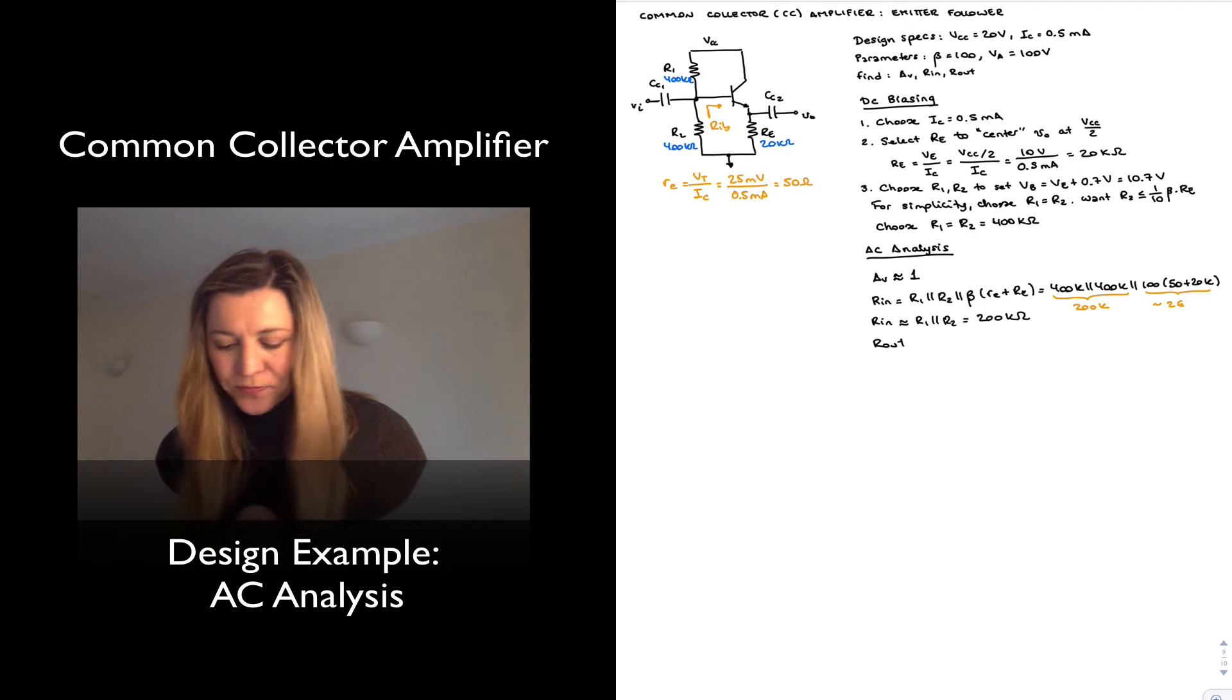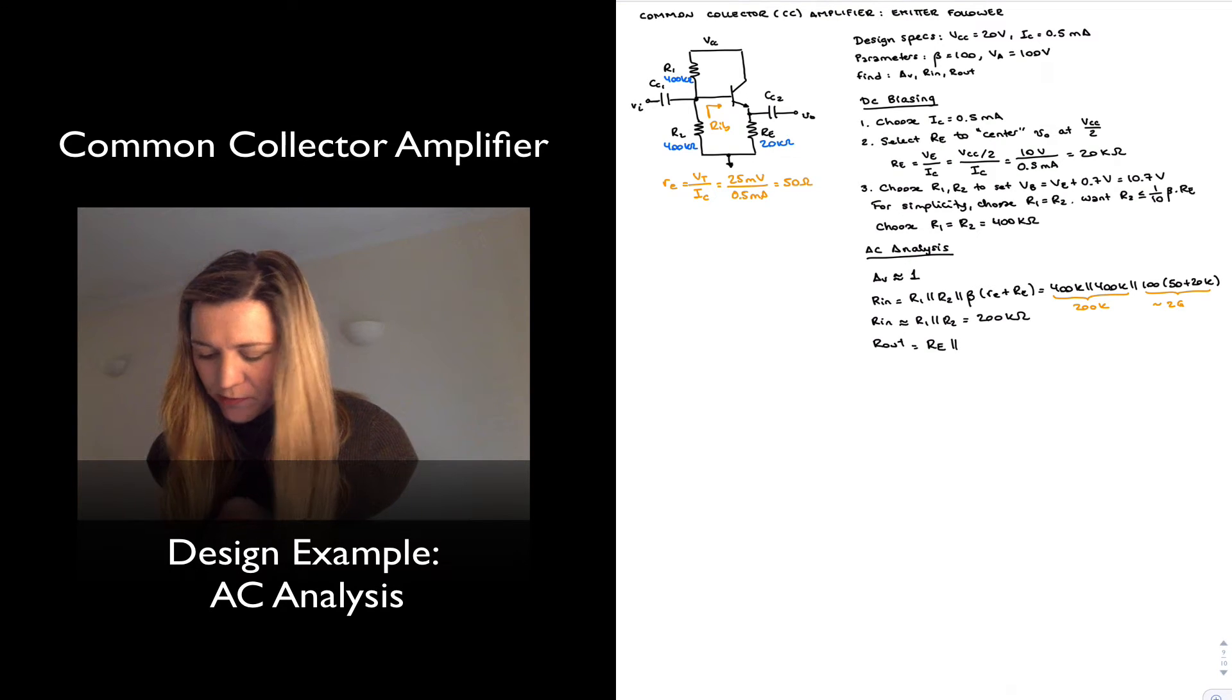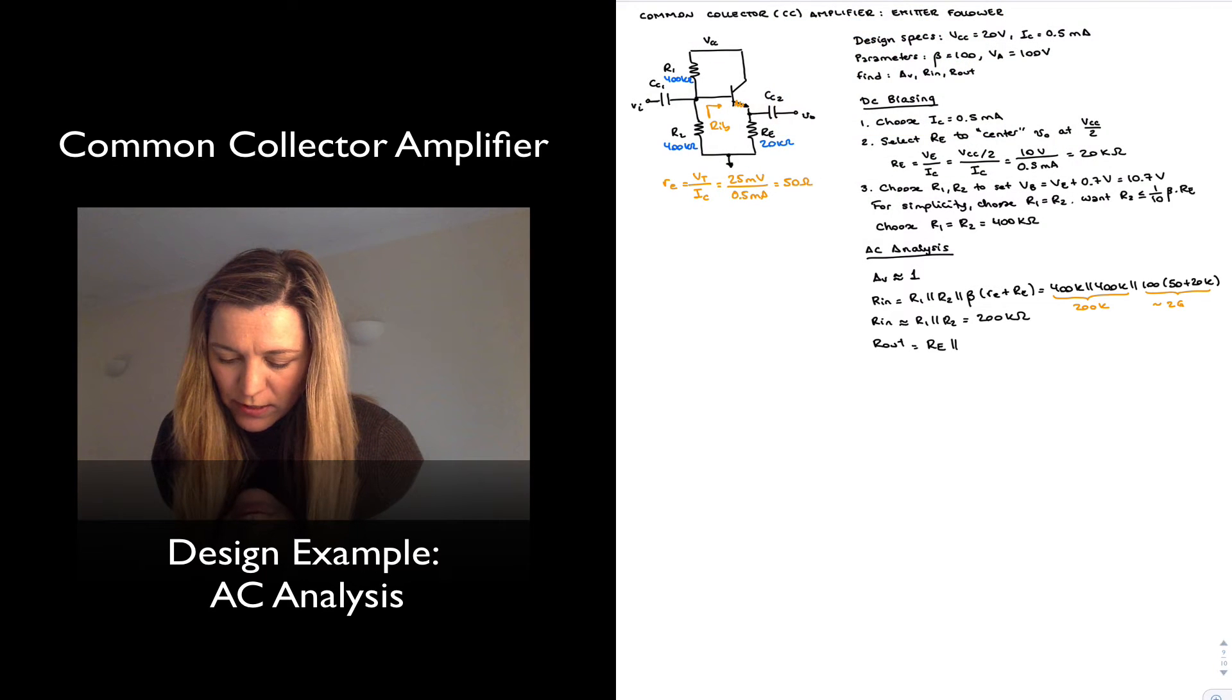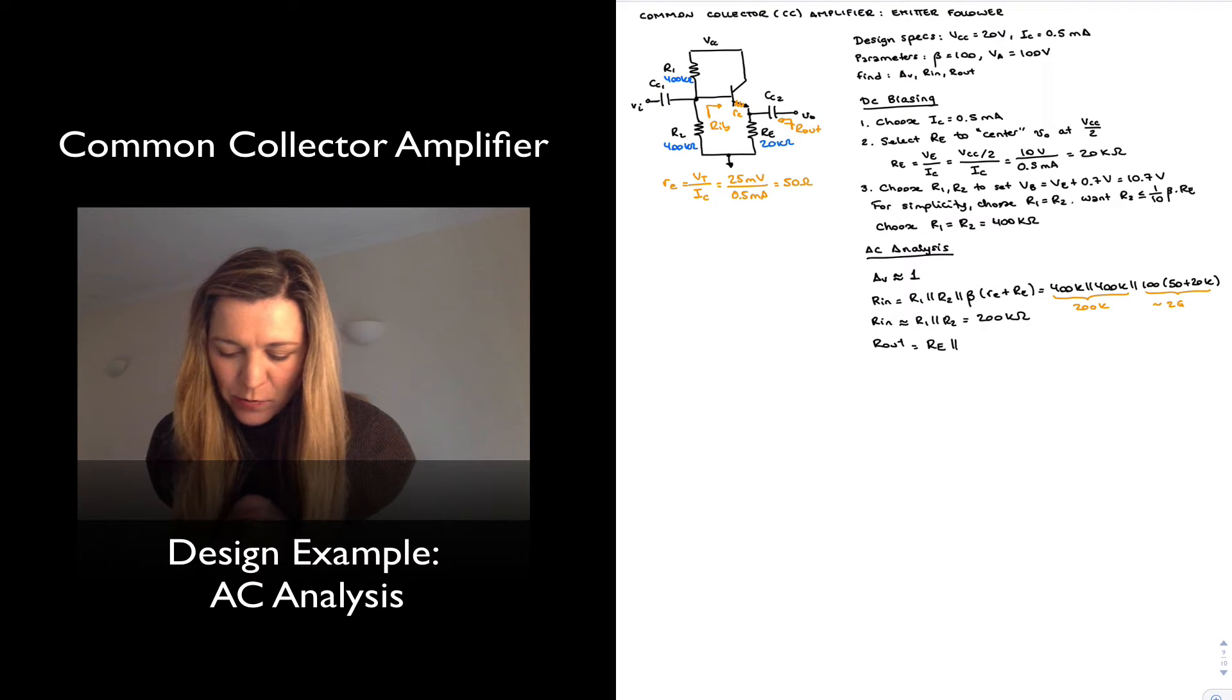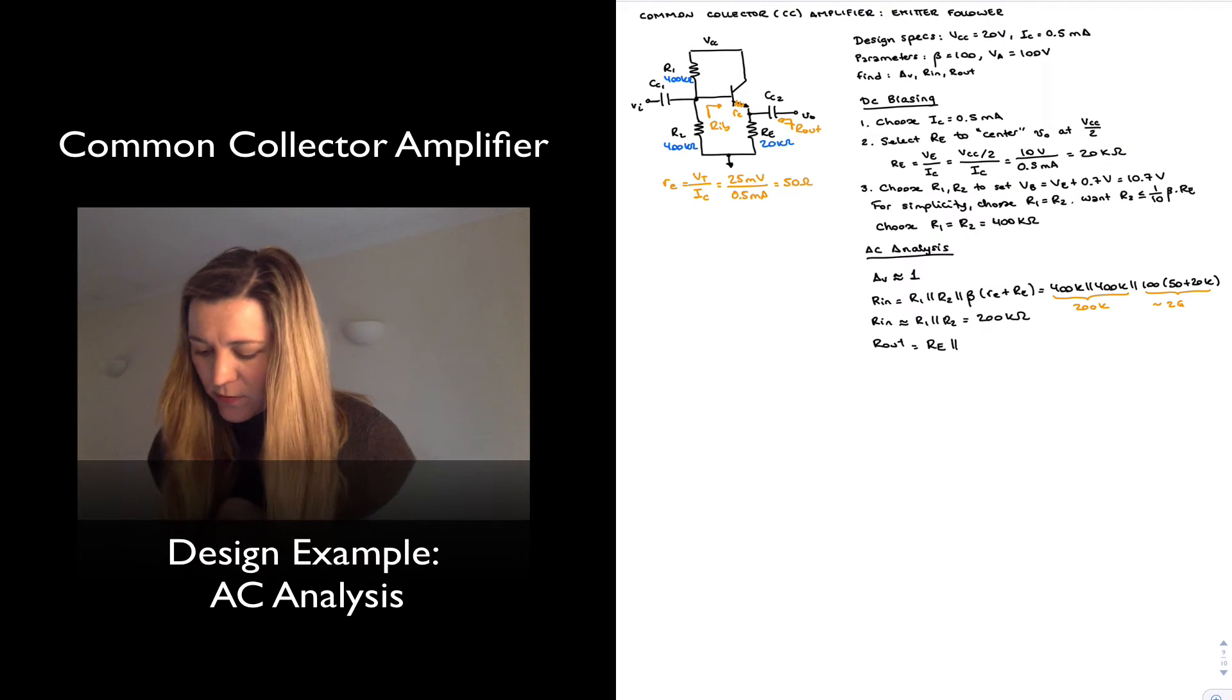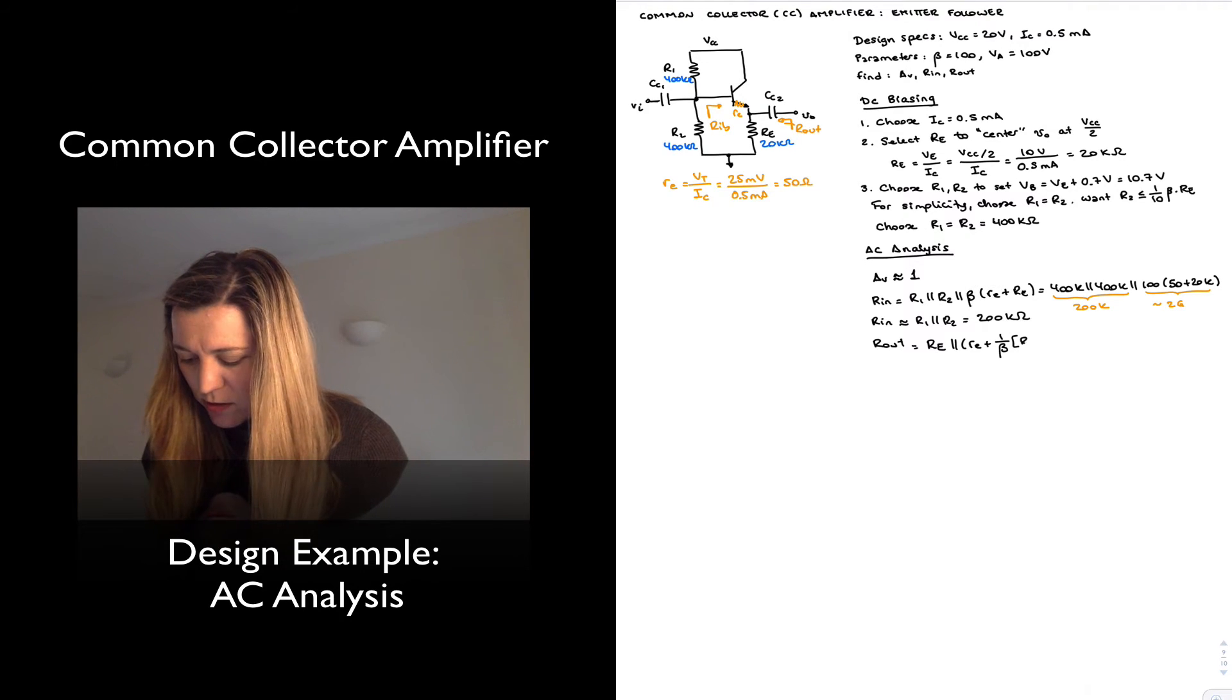Now for my R out calculation, I'm going to have R out being equal to RE in parallel with little RE here. Remember R out, I'm looking at the resistance from this terminal. And so I have RE in parallel with little RE plus the resistance looking at the base or towards the base of the transistor, which we need to apply the inverse reflection rule, and that all gets divided by 1 over beta. So it's going to be in parallel with RE plus 1 over beta times resistance connected to the base, which is R1 in parallel with R2.